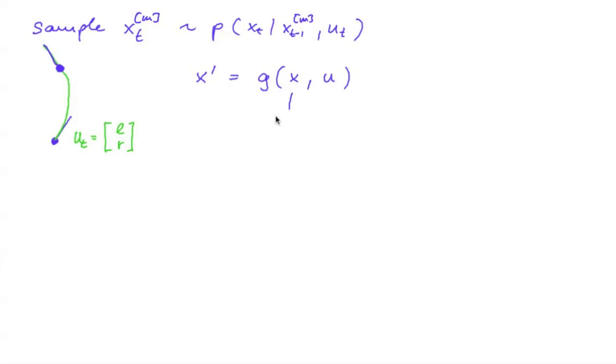And now here, this is our particle xt minus 1 m. This is our control left t and right t. And this is our new particle xt overline m. Now this is an exact function. However, the movement according to the control is inexact.